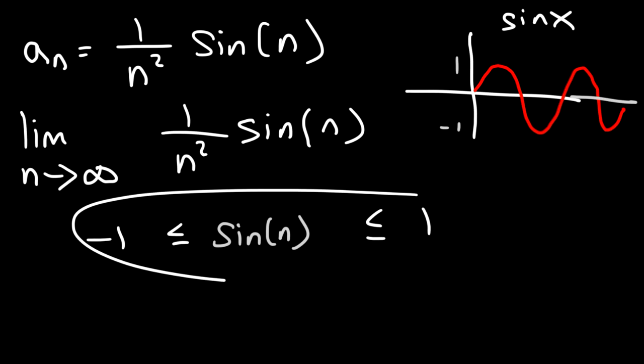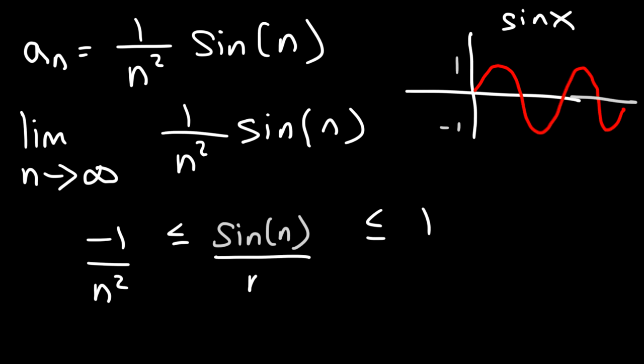Now taking this expression let's divide all three sides of the inequality by n squared. So we're going to have negative 1 over n squared, sine n over n squared which is the original expression, and positive 1 over n squared.